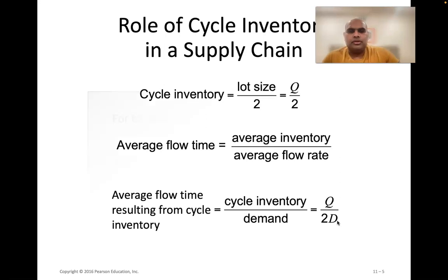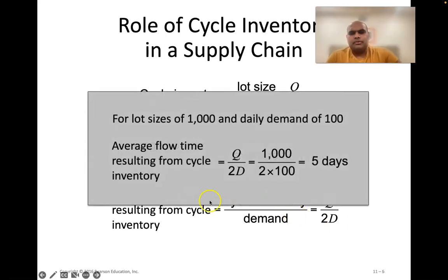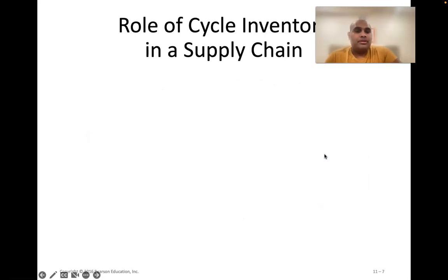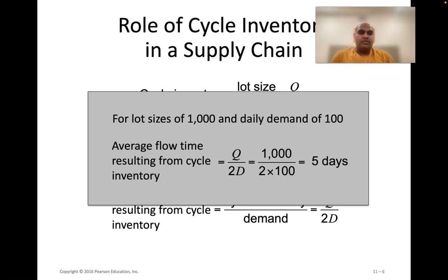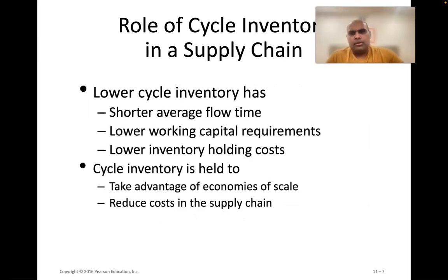For example, with a lot size of 1,000 and a daily demand of 100, the average flow time is Q/(2D) = 1,000/(2×100) = 5 days. This means that on average it takes five days for one unit of inventory to flow through the system. Some units stay longer, some less, but it averages out to five days.